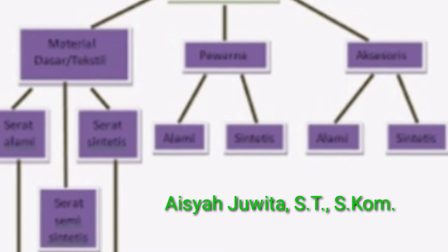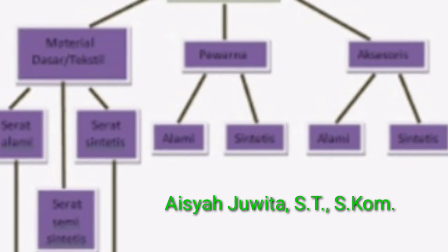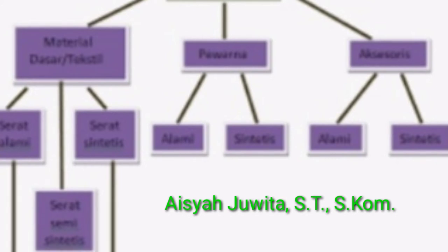Pewarna yang digunakan untuk pewarna tekstil juga ada yang berasal dari bahan alam dan sintetis. Pada kerajinan tekstil kadangkala digunakan aksesori seperti kancing, manik-manik, risleting, dan lain-lain. Aksesori tersebut ada yang berbahan sintetis seperti plastik, ada pula berbahan alami seperti kancing batok kelapa atau manik-manik dari batu.